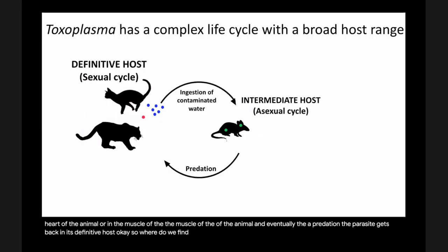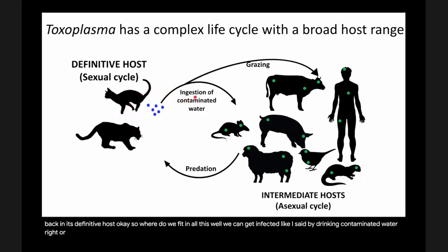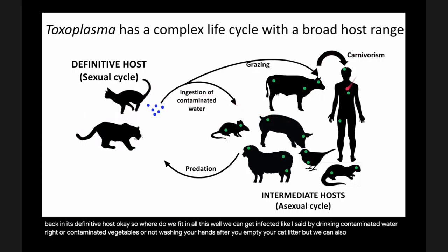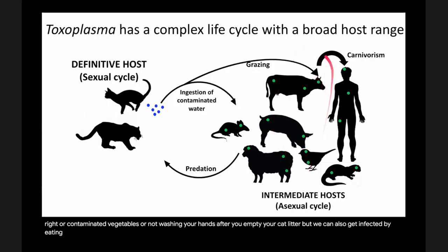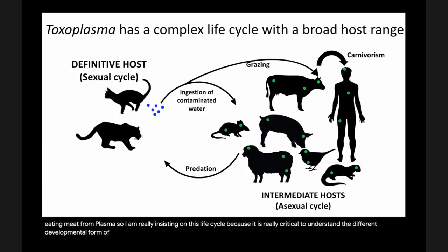Where do we fit in all this? We can get infected by drinking contaminated water or eating contaminated vegetables, or not washing hands after emptying a cat litter. We can also get infected by eating meat from organisms chronically infected with Toxoplasma. I'm really insisting on this life cycle because it is critical to understand the different developmental forms of this parasite that are capable of causing infection.